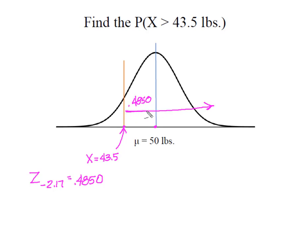But I want to know the probability that the bulldog weighs more, so I have to include this other 50% of the curve. So I'm going to add the two areas together and I'm going to get 0.9850. Now I know the probability of randomly selecting a dog and having it weigh more than 43.5 pounds is 98.50%.